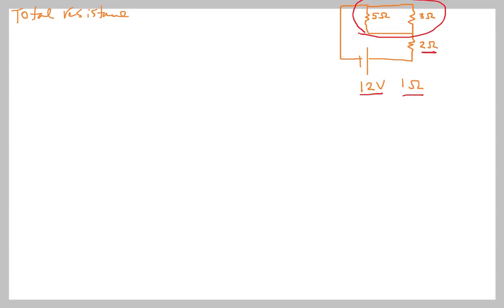So the first thing we need to do is solve for what the total resistance of the parallel branch is. And that looks like this: 1 over RT for the parallel branch is equal to 1 over 5 ohms plus 1 over 3 ohms. And when you solve that out, you get a total resistance of 1.9 ohms.